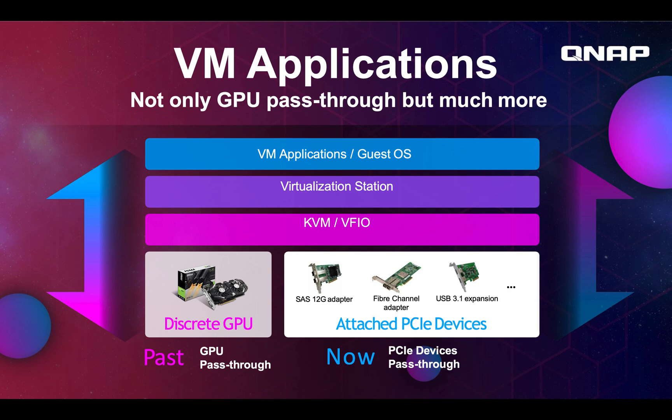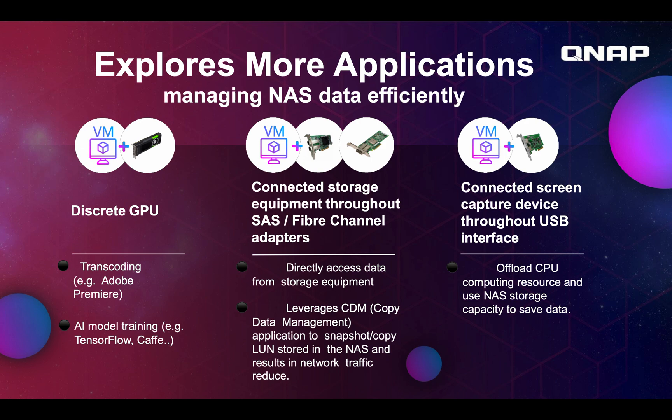But now that we have PCIe Pass-Through, we could still pass through a GPU, but we can also pass through many other PCIe devices. For example, you could use a GPU if you're running Adobe Premiere in a VM for rendering, or if you want to run TensorFlow or Caffe for computing. With a SAS card or a Fiber Channel card, you could connect to other kinds of storage devices without using your network. And you could connect a stable streaming device through a USB stable streaming device.